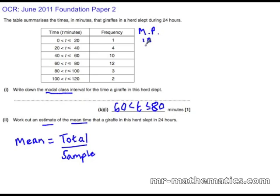So the middle between 0 and 20 is 10, 20 and 40 is 30, and so on to 50, 70, 90, and 110.